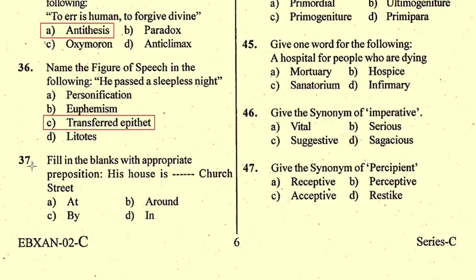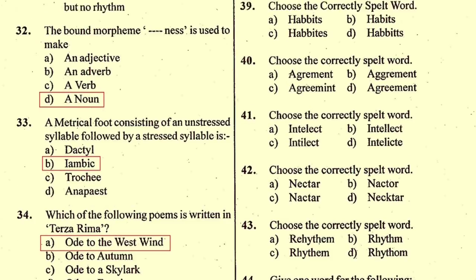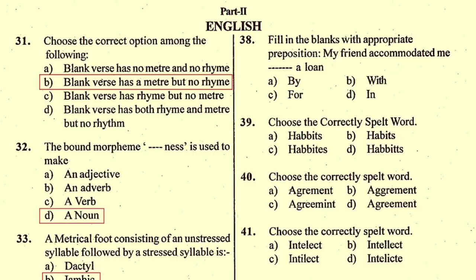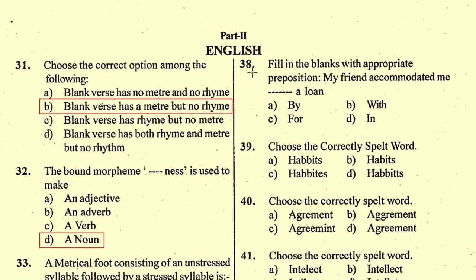Question number 37: Fill in the blank with the appropriate preposition — 'My friend accommodated me ___ a loan.' The right preposition is 'with', given in option B: 'My friend accommodated me with a loan.'